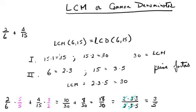So we'll try 15 times 2. 15 times 2 is 30. 6 does divide into 30, so I stop there and take 30 as the LCM. That's the first way of finding the LCM between two numbers.